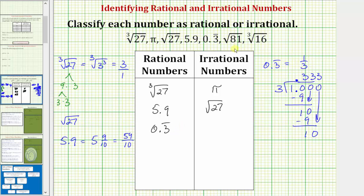Next we have the square root of 81. Because 81 is equal to nine times nine, this is equal to the square root of nine squared, which is equal to one factor of nine. Because we can write nine as nine over one, the square root of 81 is rational.